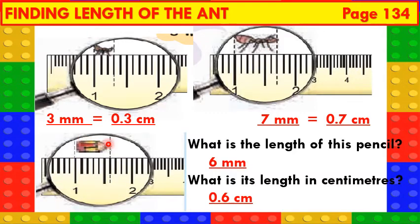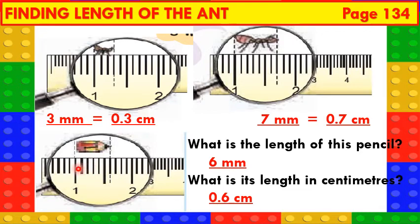Now, let us find the length of this small pencil in both millimetres and centimetres. Let us count: 1, 2, 3, 4, 5, 6. So, the length of this small pencil is 6 millimetres or 0.6 centimetres. Or, we can also say that the length of this small pencil is 6 tenths of a centimetre.